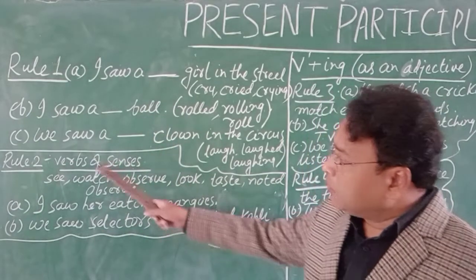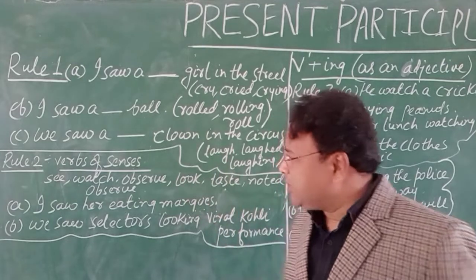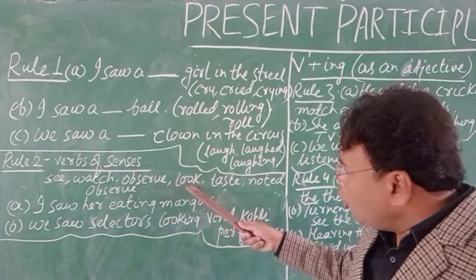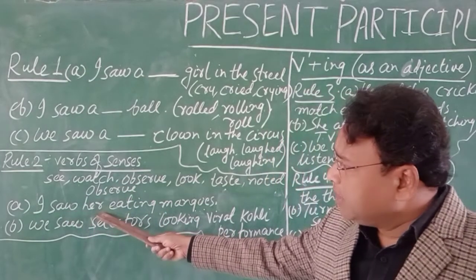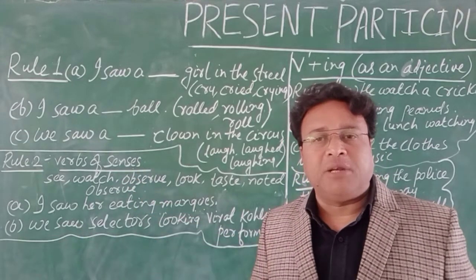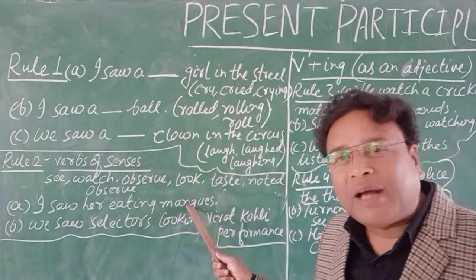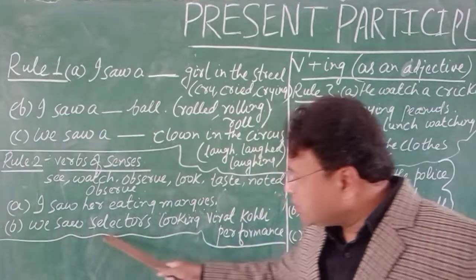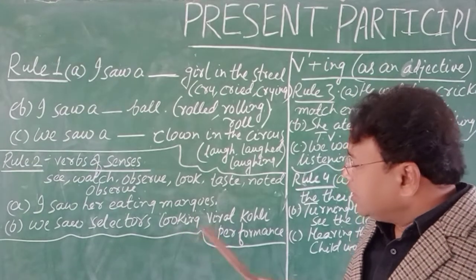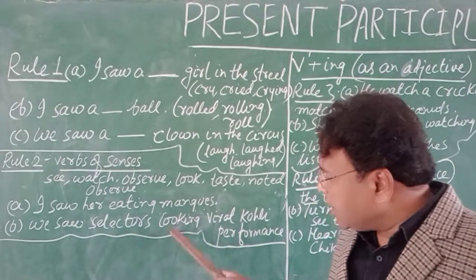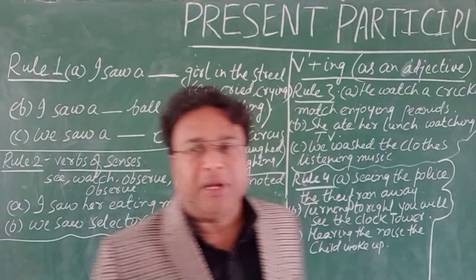یہ دیکھیں دوسرا rule — verb of senses۔ ہماری کچھ senses ہوتی ہیں: جیسے دیکھنا، سننا، taste کرنا۔ تو see، watch، observe، look، taste — جب ہم اس طرح کی verbs کا استعمال کرتے ہیں تو یہاں پر بھی present participle کا استعمال کریں گے۔ 'I saw her eating mangoes' — میں نے اس کو آم کھاتے ہوئے دیکھا۔ 'We saw selectors looking at Virat Kohli's performance.' تو verb of senses کے ساتھ بھی present participle کا استعمال ہوتا ہے۔